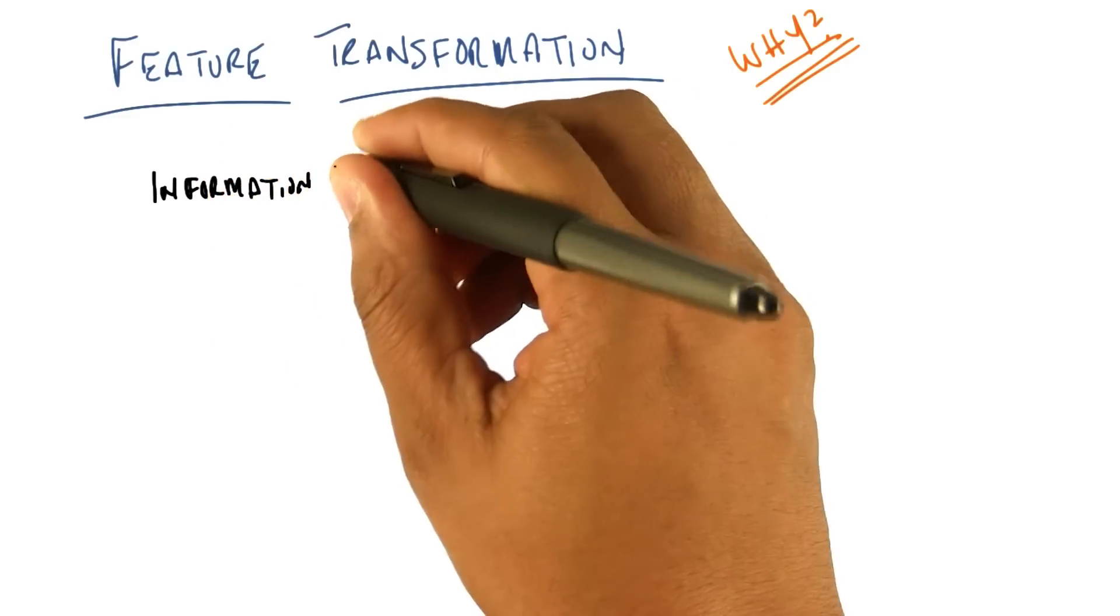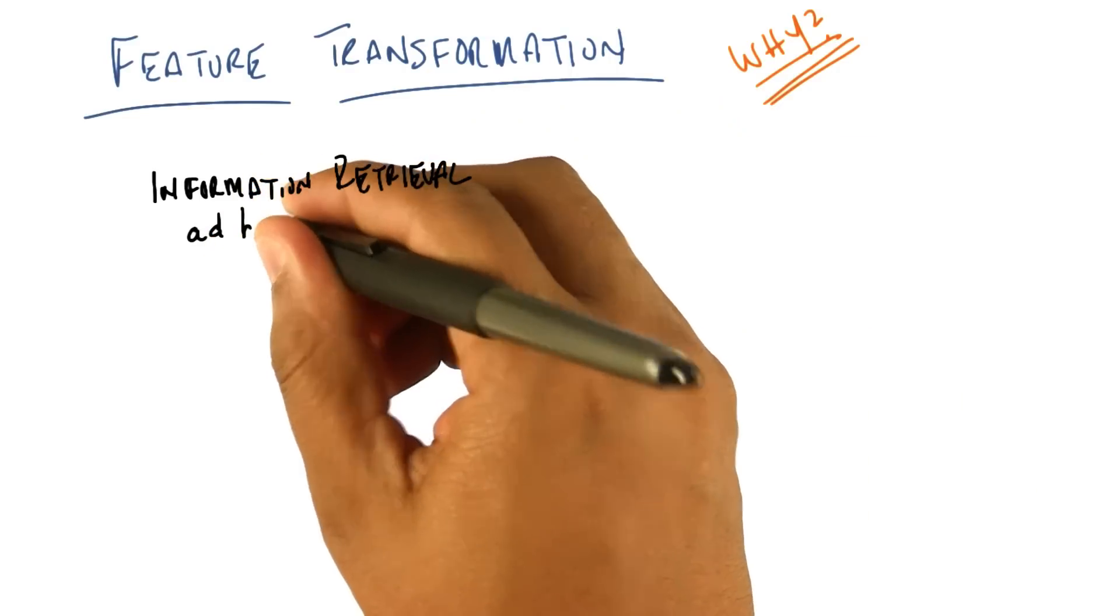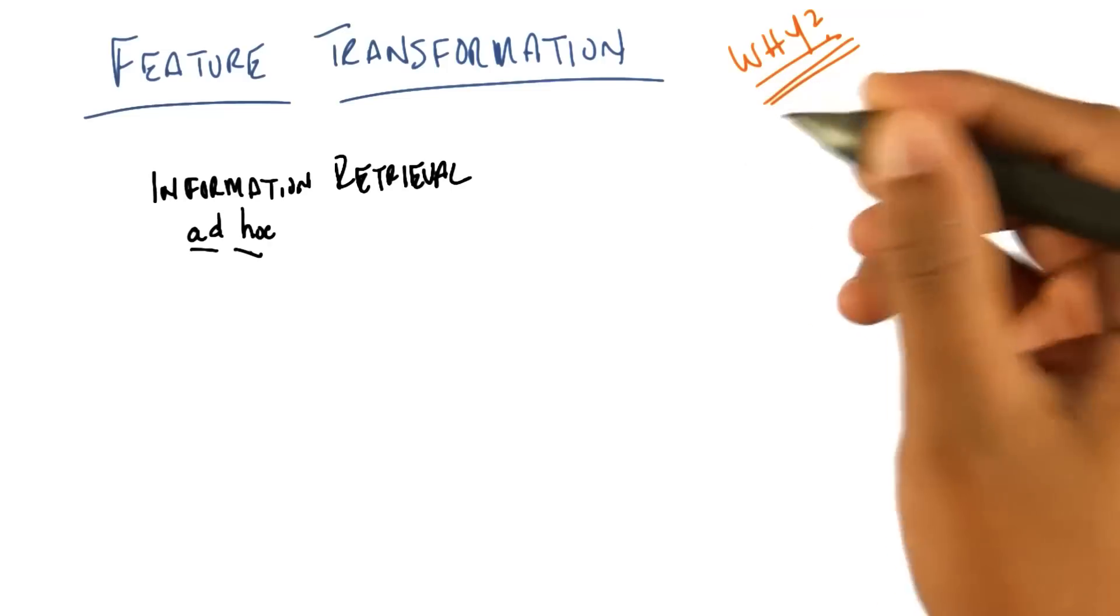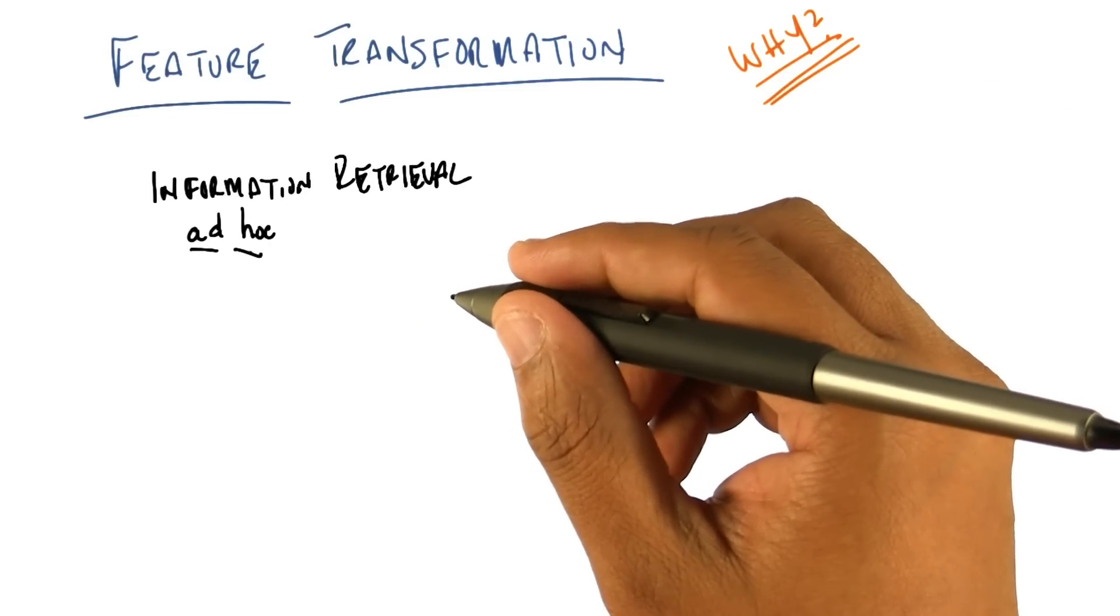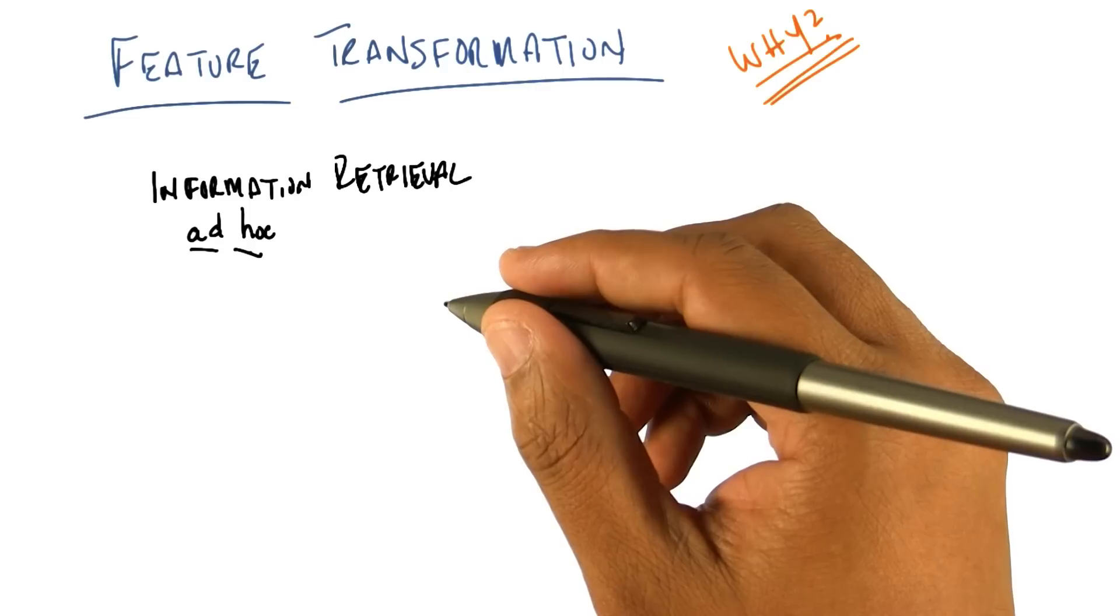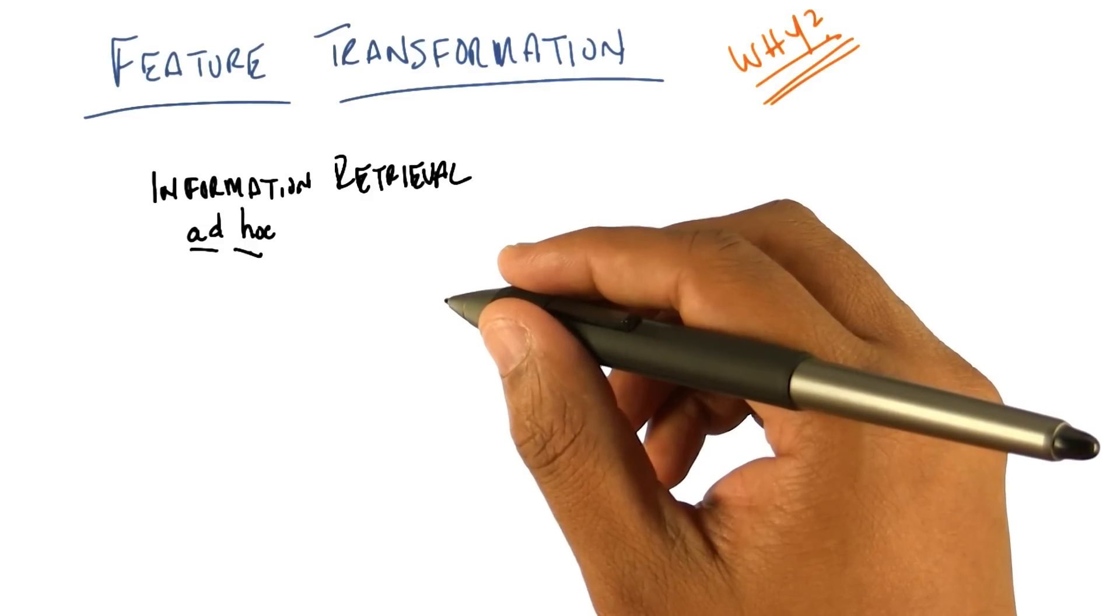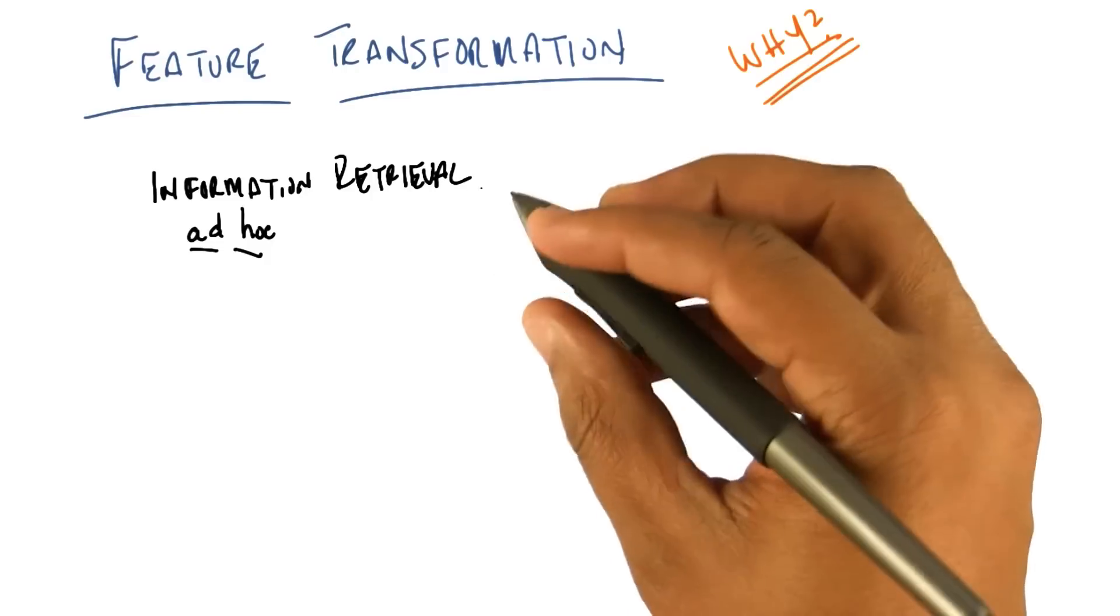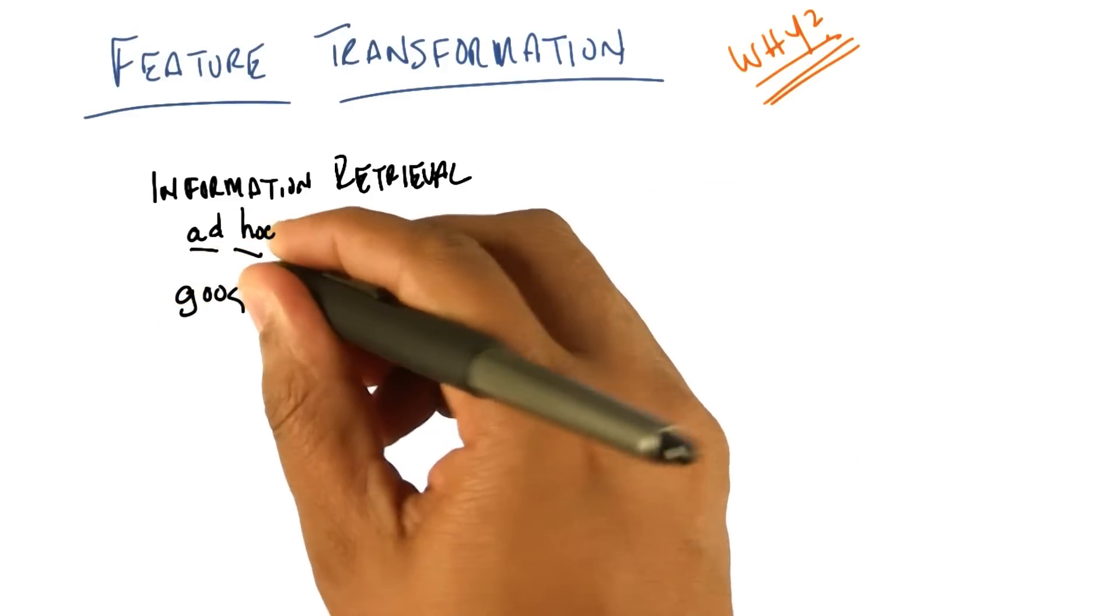That problem is information retrieval. So in particular, I'm talking about what's called ad hoc retrieval. Do you know what the ad hoc retrieval problem is? I assume that if you start with a key and you add hoc to it, you get hockey. No, that would be a kind of feature transformation. We would call that the pun transformation. The ad hoc retrieval problem, maybe I can help you out by calling it by another nickname, it's the Google problem.